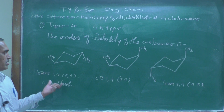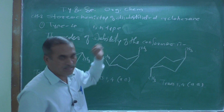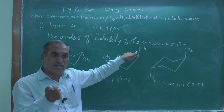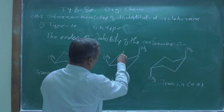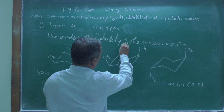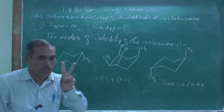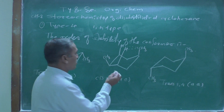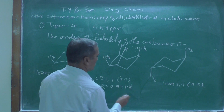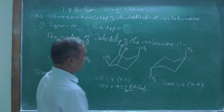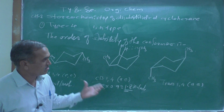For the trans-1,4 ee conformer, both methyl groups are equatorial — zero 1,3-diaxial interactions — so the internal energy is zero kcal/mol. For the cis-1,4 ae form, one methyl group is axial and generates two 1,3-diaxial interactions with axial hydrogens at C1, C2, and C3. The energy is 2 × 0.9 = 1.8 kcal/mol.